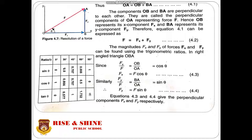To find the magnitudes of Fx and Fy, we use trigonometric ratios for the triangle OAB. For the horizontal component: cos theta = base / hypotenuse = Fx / F, so Fx = F cos theta (equation 4.3). For the vertical component: sin theta = perpendicular / hypotenuse = Fy / F, so Fy = F sin theta.